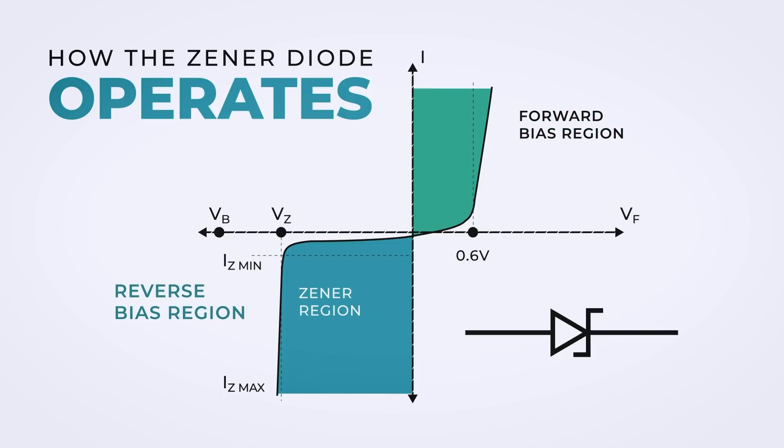In the reverse bias, the Zener diode starts to conduct only when it reaches the Zener voltage. When we increase the reverse voltage above the Zener voltage,